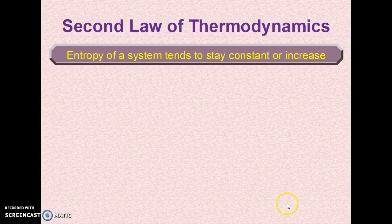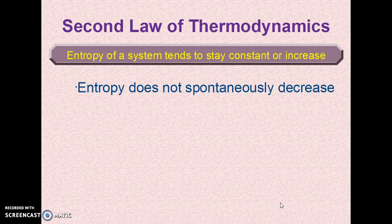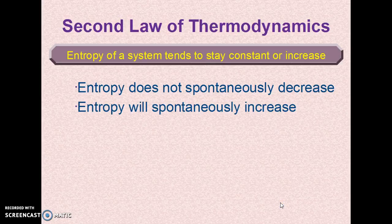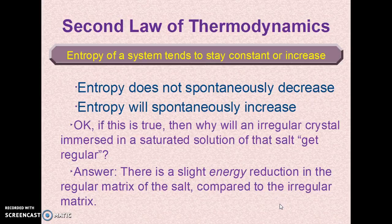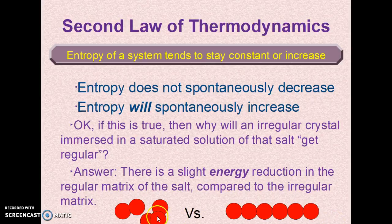The second law of thermodynamics deals with entropy and tells us that the entropy of a system tends to stay constant or to increase — it does not spontaneously decrease. You might ask: if this is true, why will an irregular crystal immersed in a saturated solution form a regular crystal? The answer is there's a slight energy reduction when comparing a regularly ordered, smooth-faced crystal to an irregularly formed one, so there can be an energy improvement even as local order increases.